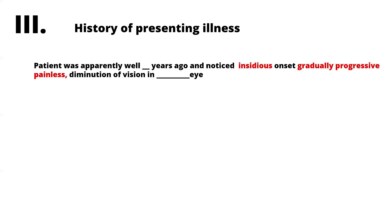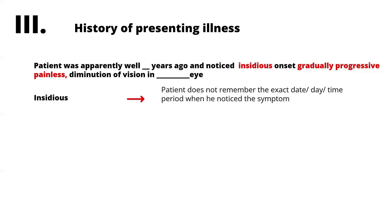After chief complaints, we move to the history of presenting illness. Start with: 'Patient was apparently well this many years/months/days ago and noticed...' For cataract, the most common presentation is insidious onset — where the patient does not remember the exact date, day, or time when they noticed the symptom. In contrast, sudden onset means the patient remembers exactly when it happened, such as 'I woke up in the morning and noticed diminution of vision' or 'I was in a meeting and suddenly noticed it.'